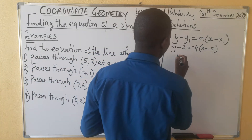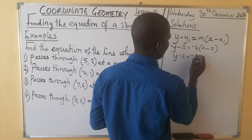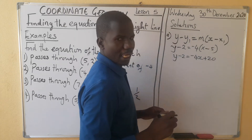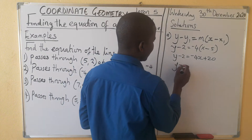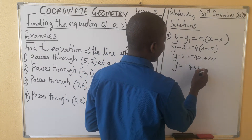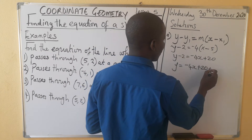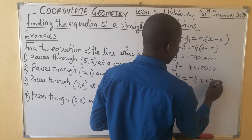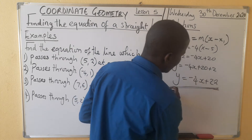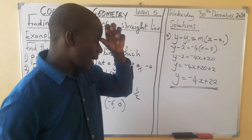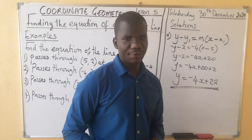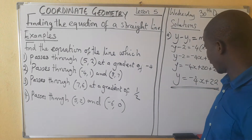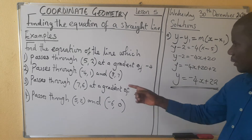We work out this part: y minus two equals negative four times x minus five. Expanding gives us plus 20, then we collect like terms. y equals negative four x plus 20 plus 2, so y equals negative four x plus 22. This is our equation. You can replay the video if you haven't fully understood the concept.